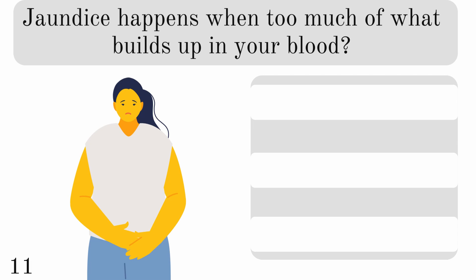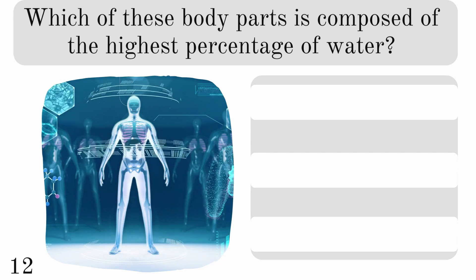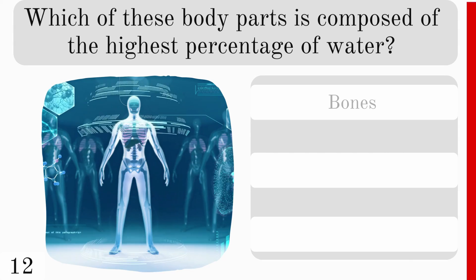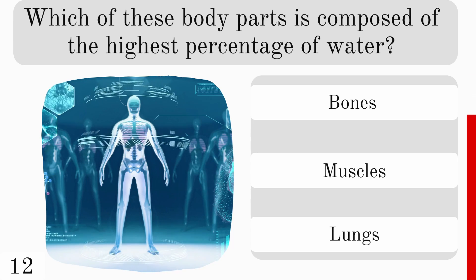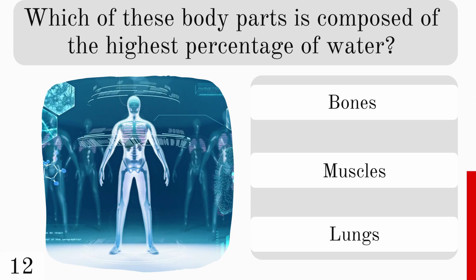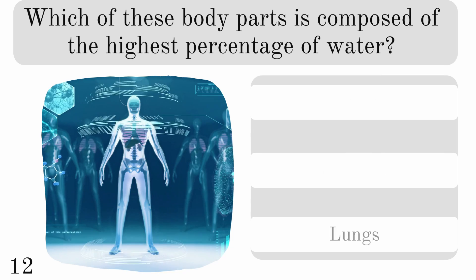Jaundice happens when too much of what builds up in your blood? Bilirubin, bile, or melanin? And the correct answer is bilirubin. Which of these body parts is composed of the highest percentage of water? Bones, muscles, or lungs? And the correct answer is lungs.